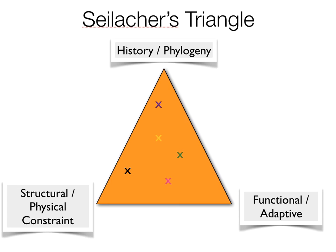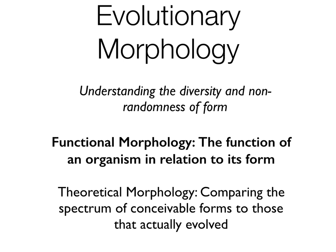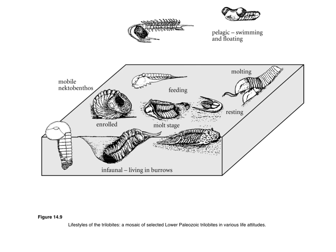It's just a useful way to think about traits in general and specifically when we think about their function. First we're going to talk about functional morphology. One good example is in the trilobites — here's a figure from the textbook that looks at the different lifestyles of trilobites in the Paleozoic.